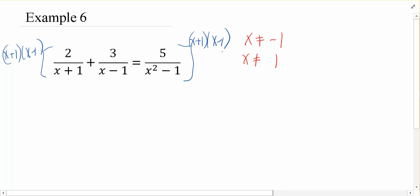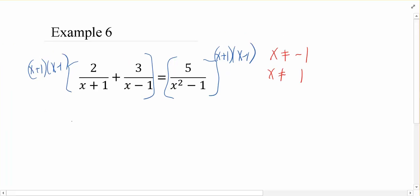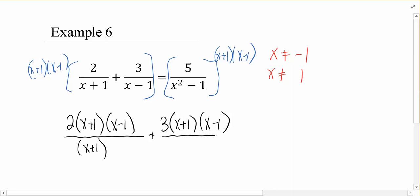But again, in other words, what's going to happen here is we're going to multiply this into the top of each of them because literally I'm multiplying it on the left so I distribute, I multiply on the right, it ends up in the top. So I'm going to have 2 times x plus 1 x minus 1 over x plus 1. Then I'm going to have 3 times x plus 1 x minus 1 over x minus 1 and then equals 5 times x plus 1 x minus 1 over x plus 1 x minus 1.